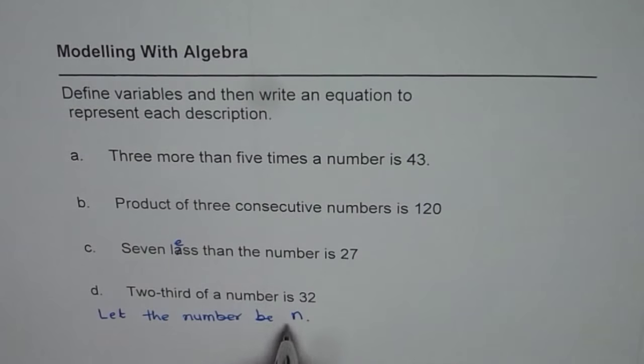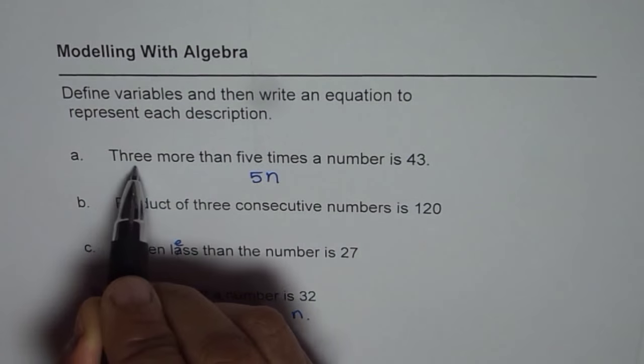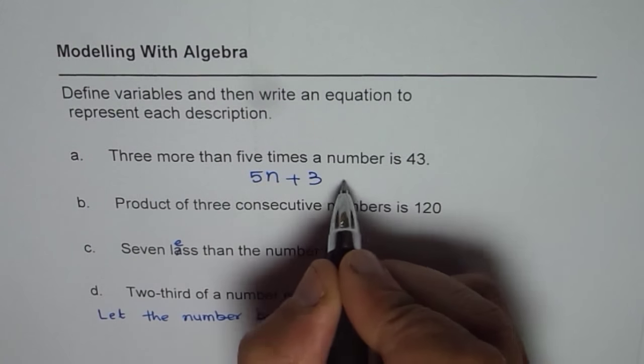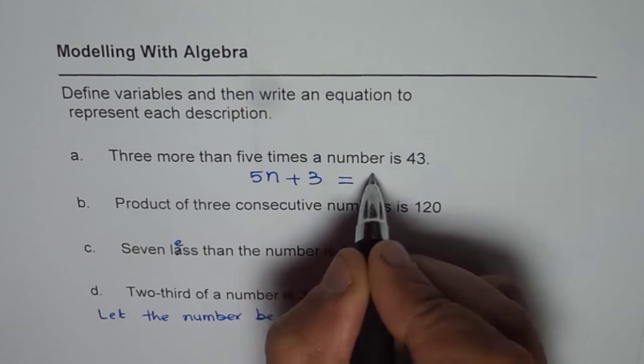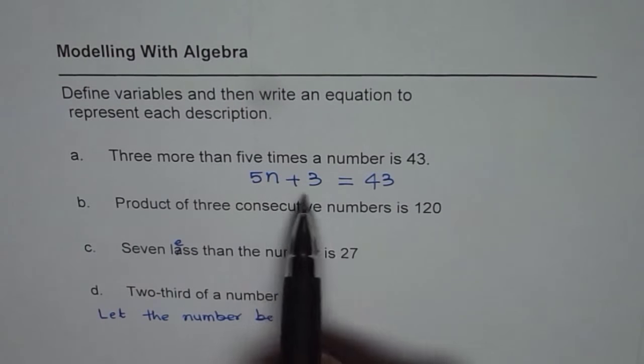5n is 5 times a number. 3 more than that means plus 3, is means equal to 43. So that is how you translate a statement into equation.